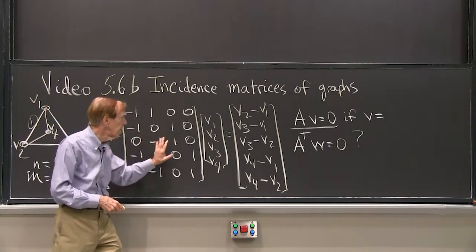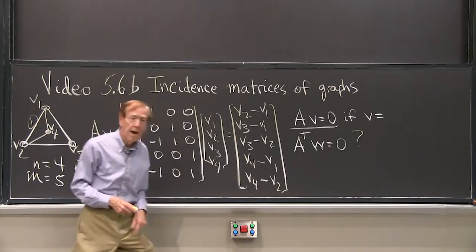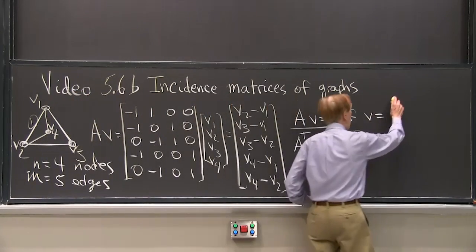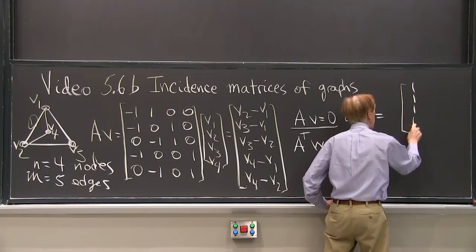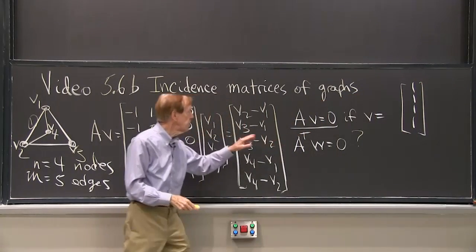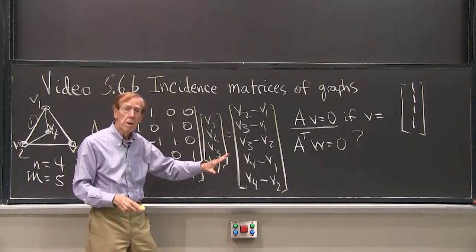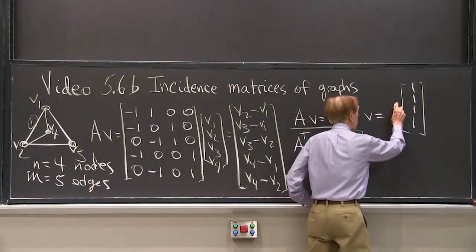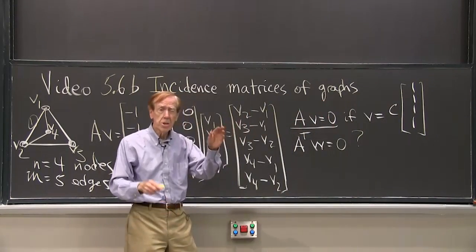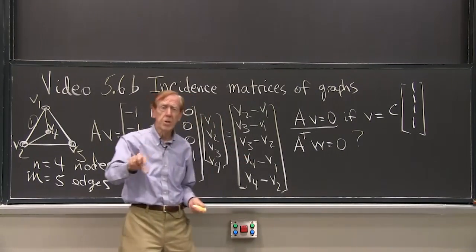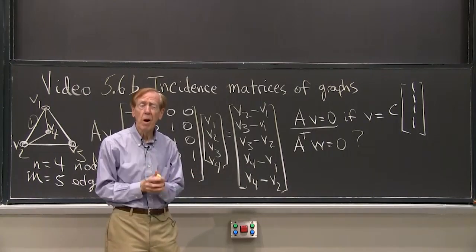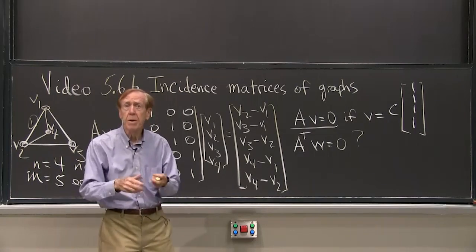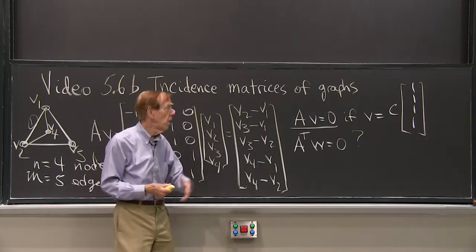Well, in this case, we can find a solution to Av equals 0. Because I can see, how do I get all those differences to be 0? Well, not hard. V could be the vector of all 1's. Then the differences would all be 1 minus 1, would all be 0. I would be solving Av equals 0. And of course, I can multiply by any constant. So all I'm saying is, if all the voltages are equal, there won't be any flow. Well, if all the voltages are equal, and I don't have any batteries or other sources in the network, there will be no flow.